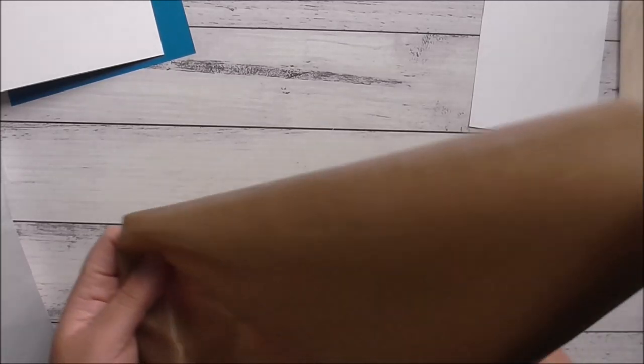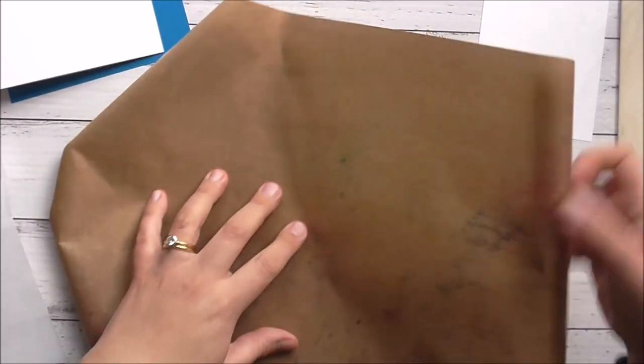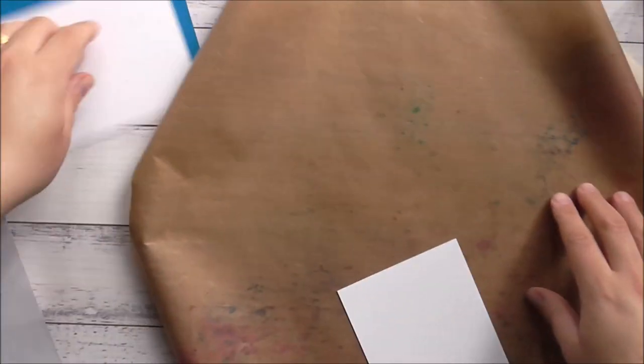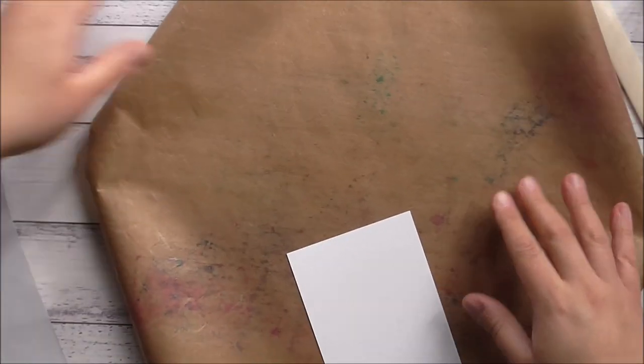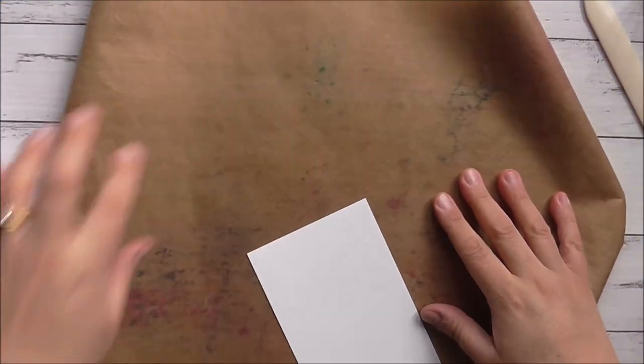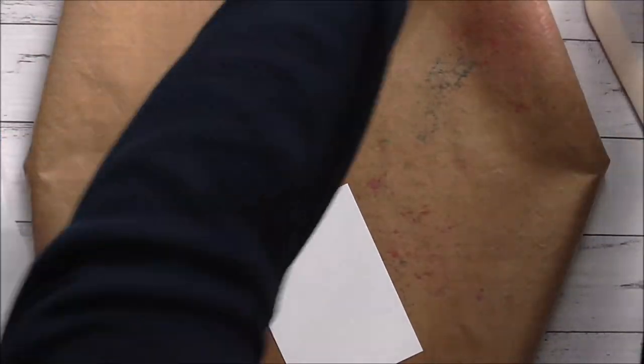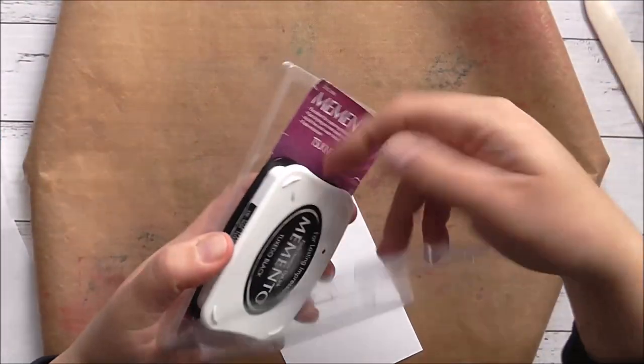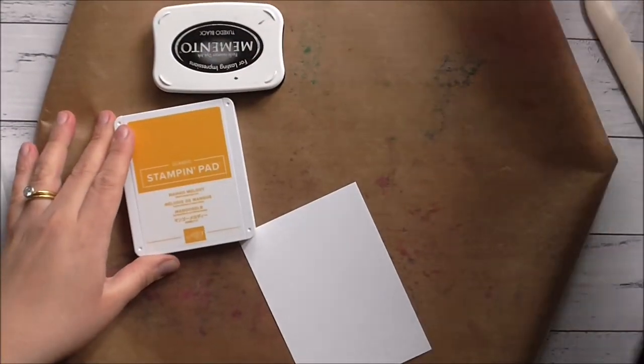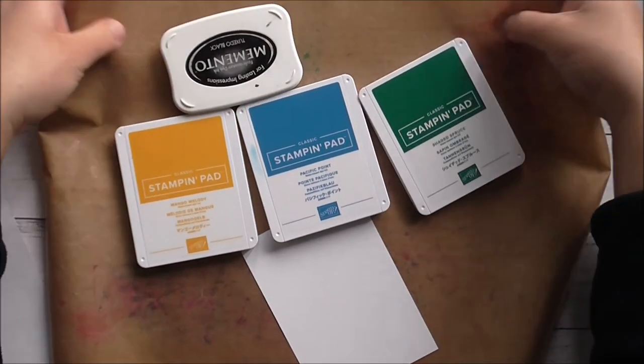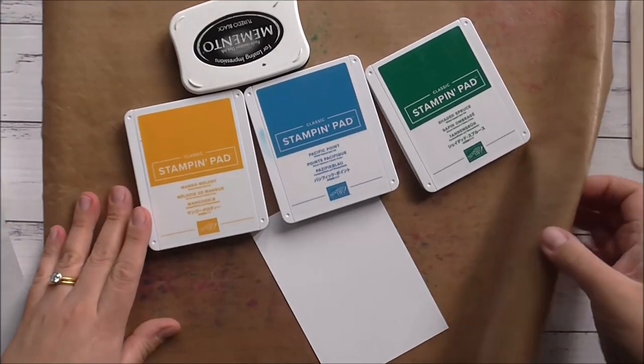I'm just going to bring out my craft sheet. This just helps to keep my desk neat, and I will be using some inks. So the inks I'm using today are Memento Tuxedo Black, Mango Melody, Pacific Point, and Shaded Spruce. Feel free to use whatever colors are similar for you.